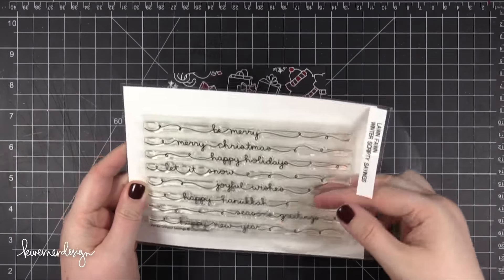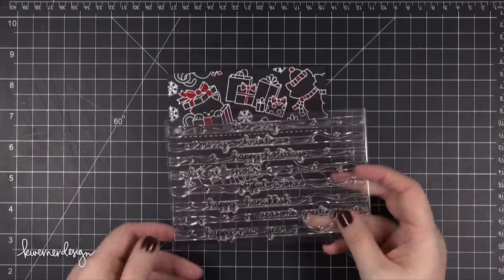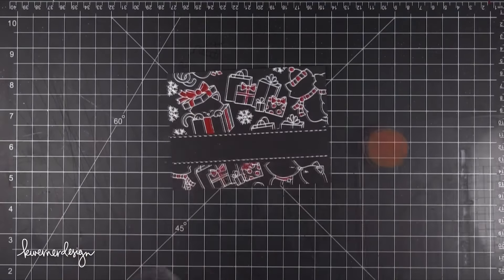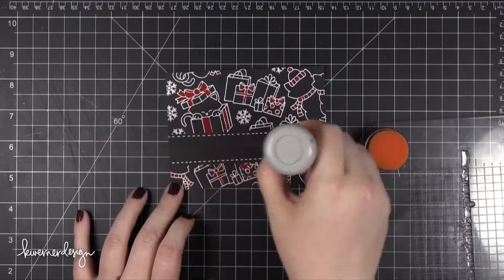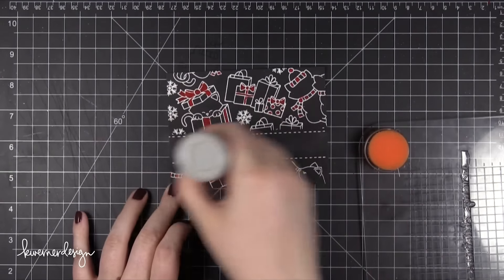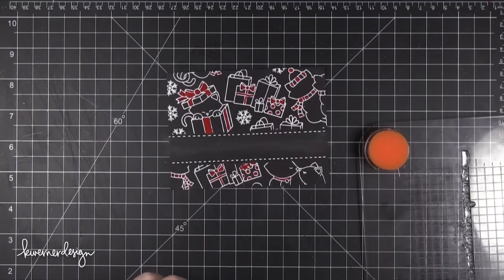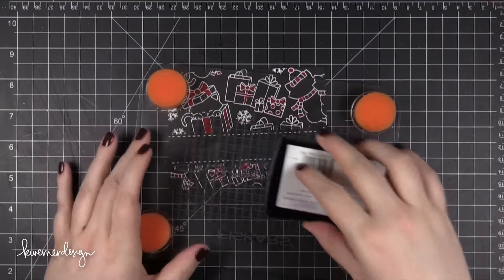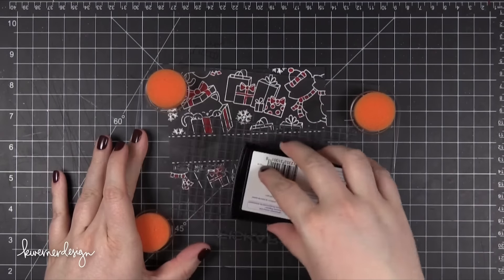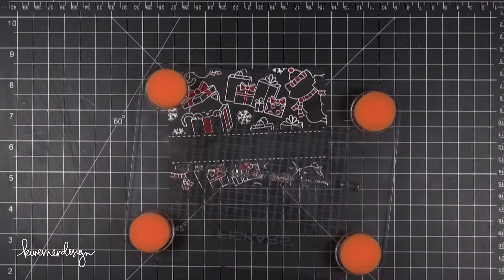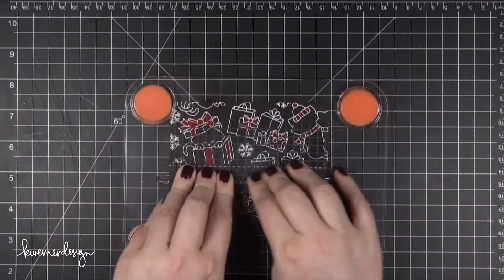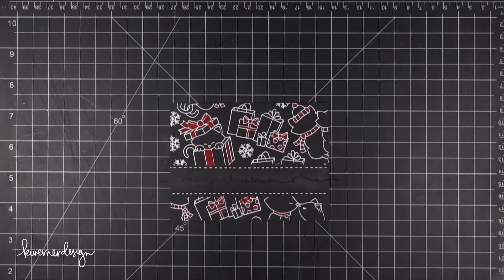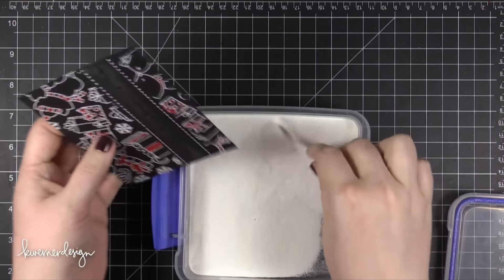I then used the Winter Scripty Sayings stamp set from Lawn Fawn and I selected the one that says Merry Christmas and I'm going to be stamping that in that area in the center that I masked off previously. I prepped that area with my EK Success Powder Tool and then inked up my stamp using VersaMark ink. I then pressed that down onto the card stock and then I applied some white embossing powder over the top.